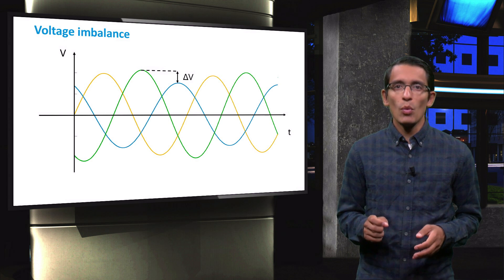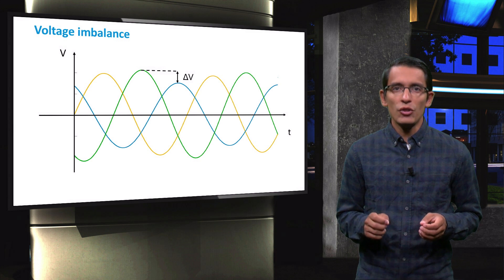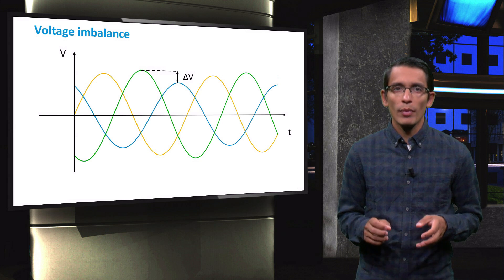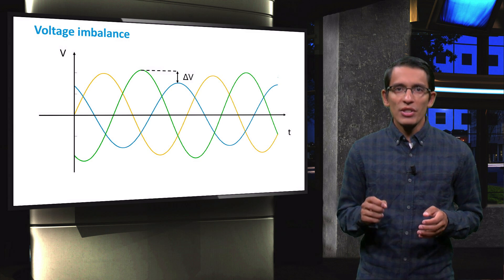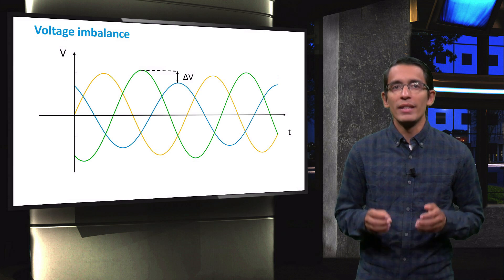This is the reason why at high PV penetrations, the cumulative size of all systems connected to each phase should be as equal as possible. Generally, all systems with installed power above 5 kW peak should be connected to an inverter which can guarantee a balanced three-phase output.